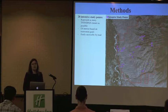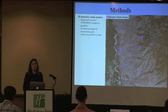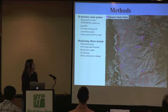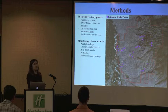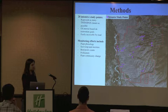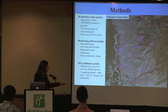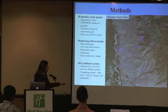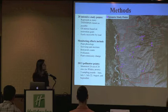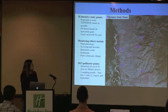Two more points have been added, so now there are 30. In 2013 we monitored 24 out of the 28 pollinator points — we skipped the points in Whaley Draw. We had five sampling rounds: once in June, twice in July, once in August, and once in September.